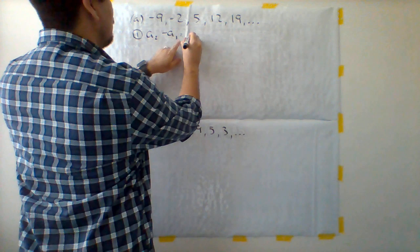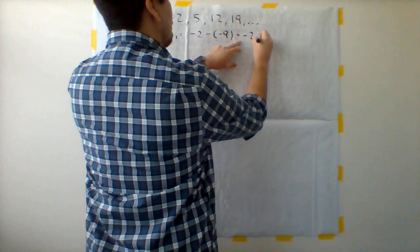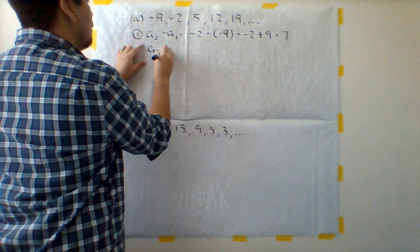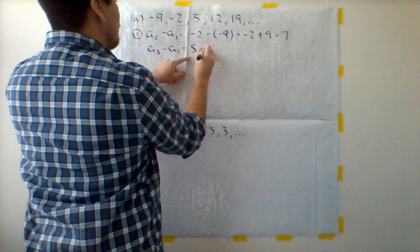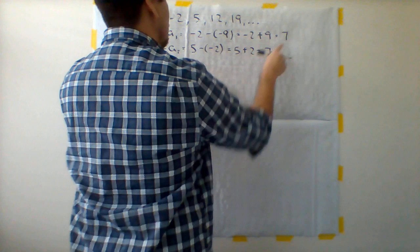I'm going to write in the second term is negative 2 minus the first term which is negative 9. We have negative 2 minus a negative that actually becomes a plus, negative 2 plus 9 which is equal to 7. So far so good. Let's try for a later term. We're going to do the third term minus the second term which is the number 5, that's our third term, minus negative 2. Well again if I subtract the negative that becomes a plus, that becomes 5 plus 2 which is 7.